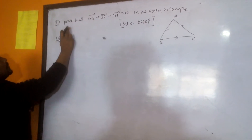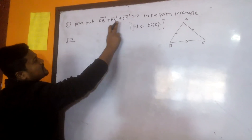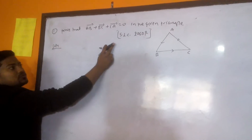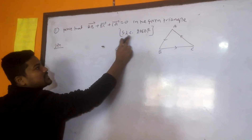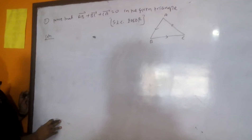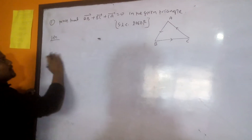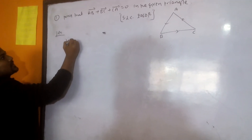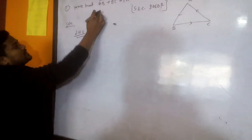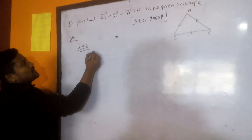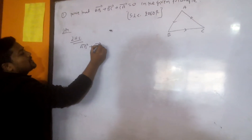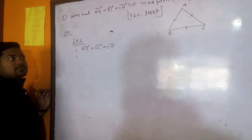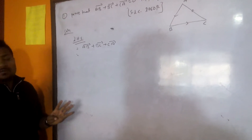Let's solve this one. Prove that AB vector plus BC vector plus CA vector is equal to zero in the given triangle. This question was already asked in SLC 2060R. So now to find the solution, first of all we have to take LHS. LHS is AB vector plus BC vector plus CA vector. We need the triangle law of vector addition.